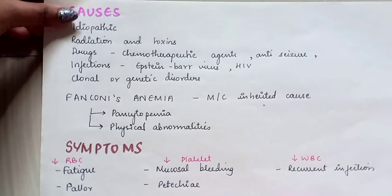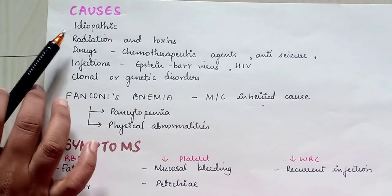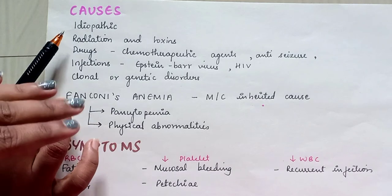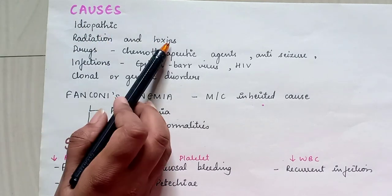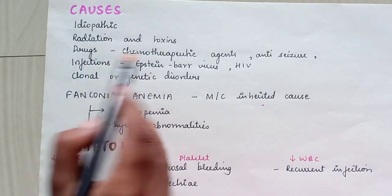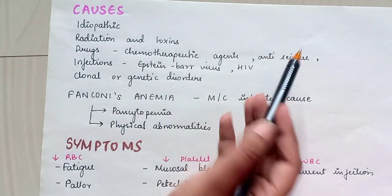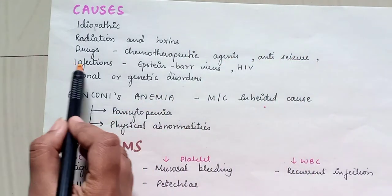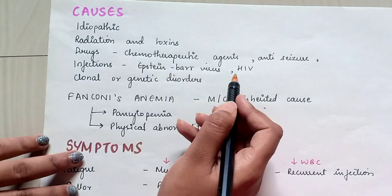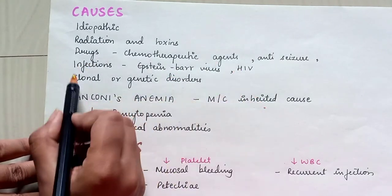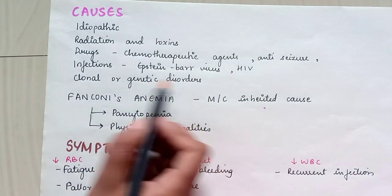What causes aplastic anemia? Firstly, it is idiopathic. Secondly, radiation and toxins are some of the main causes. Drugs such as chemotherapeutic agents and anti-seizure medications are also implicated. Infections such as Epstein-Barr virus and HIV, as well as clonal or genetic disorders, are additional causes.